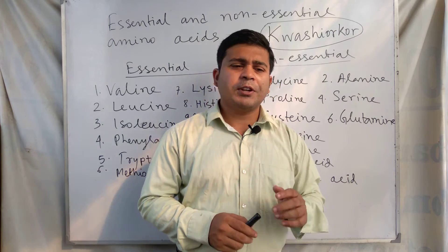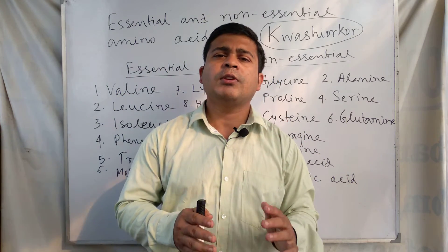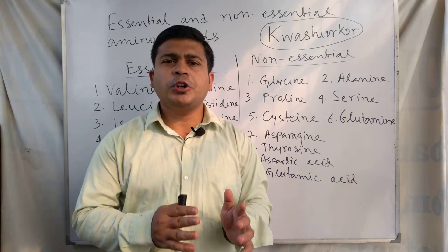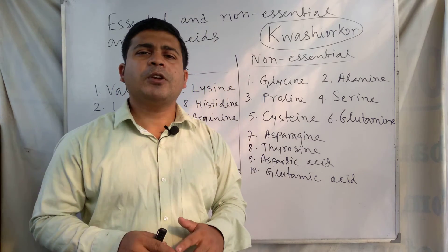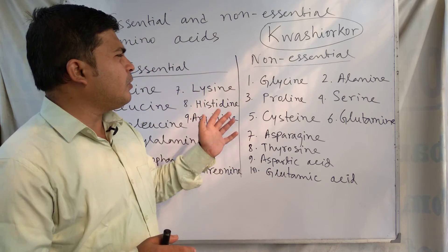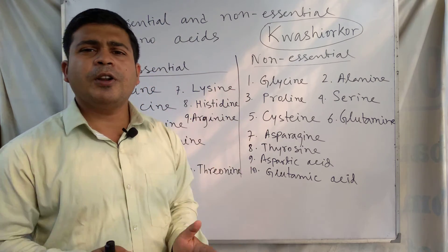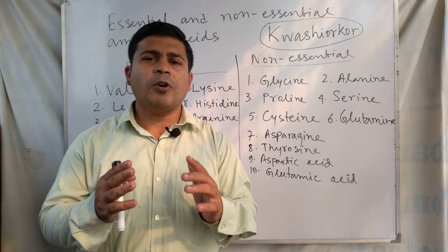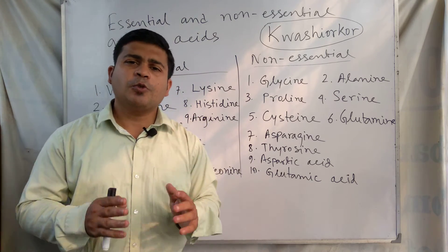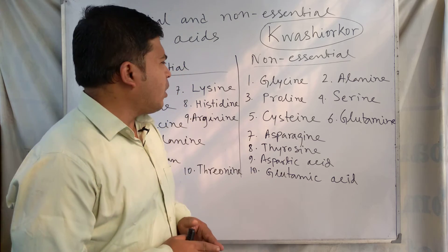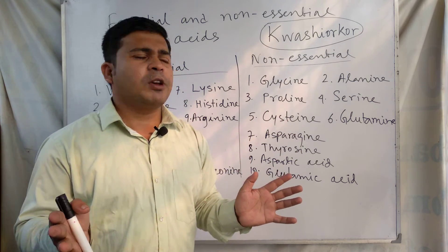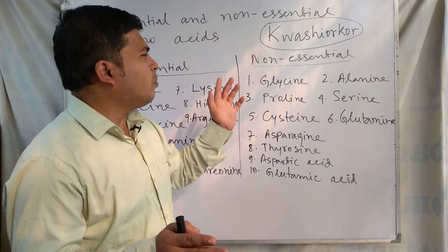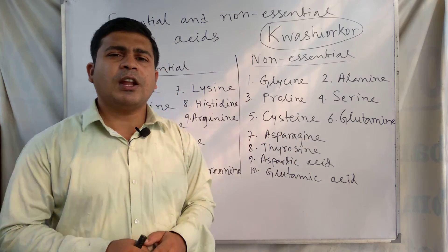That is the discussion regarding essential and non-essential amino acids — the classification of the 20 amino acids found in protein, of which 10 are essential and 10 are non-essential. A lack of essential amino acids causes kwashiorkor disease, and other diseases may also result from a deficiency of essential amino acids.